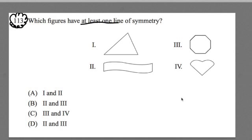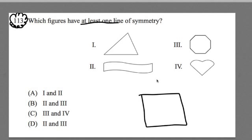Now, what is a line of symmetry? A line of symmetry cuts a figure into two congruent halves that you could fold over onto one another and they would line up perfectly. So if I folded this square on this dotted line here, this point would fold over onto this point, and they would absolutely fold over and touch.